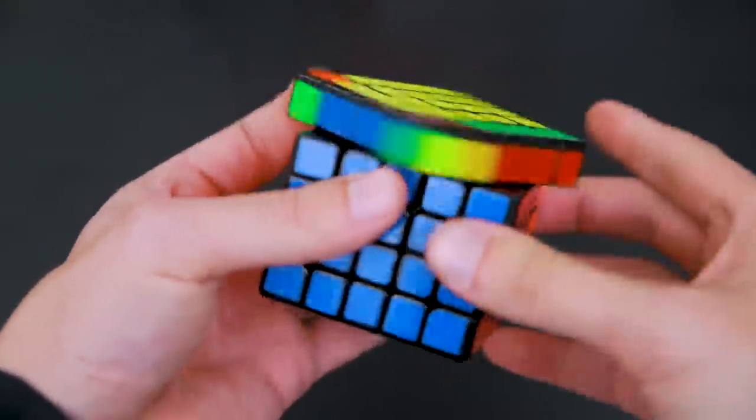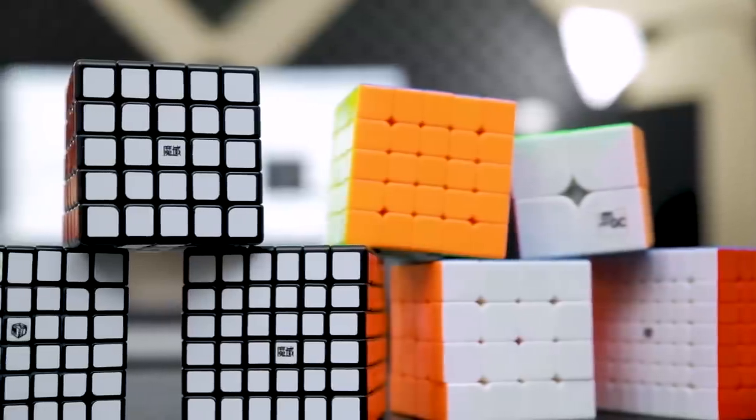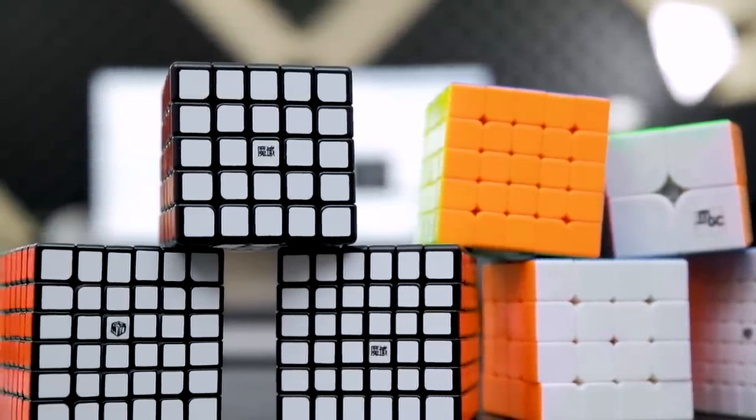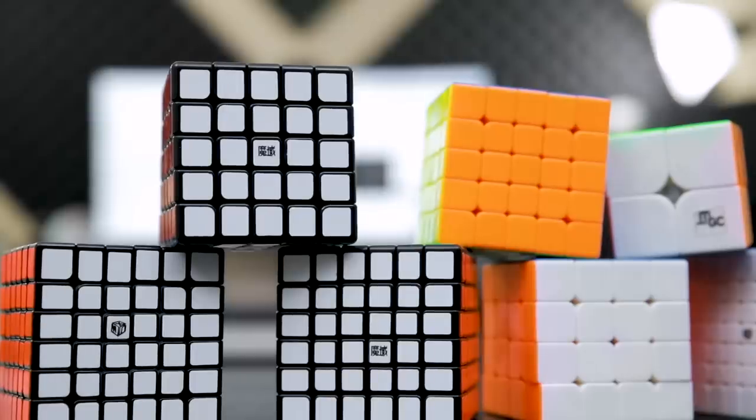Compared to the Wushuang, the Aochuang GTS has a more bubbly and blocky feel and it is naturally a little faster. Both of these cubes are great options and we would highly recommend either.